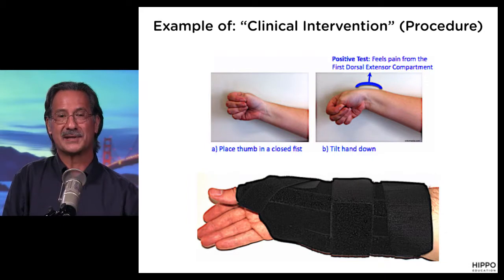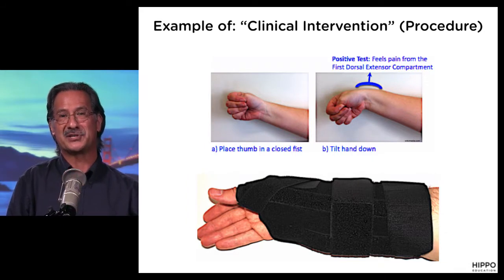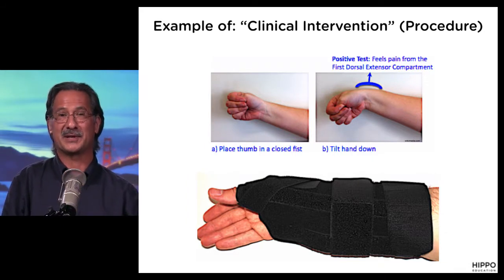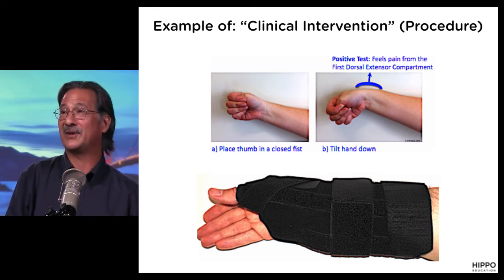The type of question this is falls under the category of clinical intervention — do you know the appropriate procedure to use to intervene on somebody, or does someone even need a procedure? Some patients just need observation for their particular condition. Now looking at this diagram, it's showing the physical exam finding noted as well as the particular treatment. This is an example of a Finkelstein test.